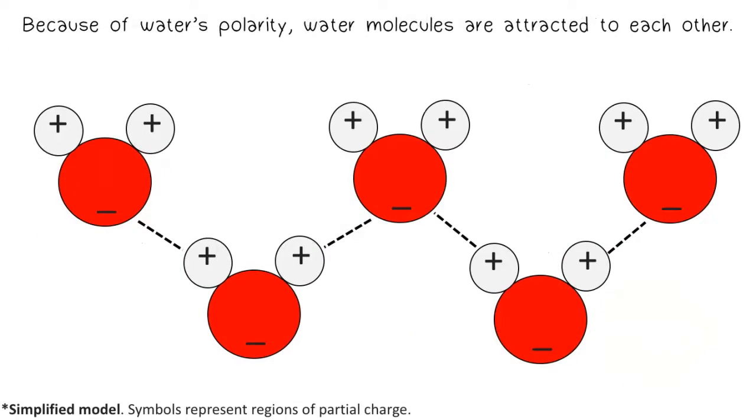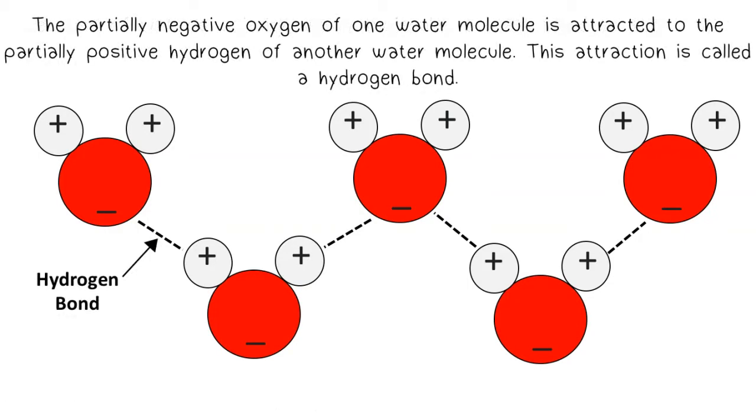Because of water's polarity, water molecules are attracted to each other. The partially negative oxygen of one water molecule is attracted to the partially positive hydrogen of another water molecule. This attraction is called a hydrogen bond.